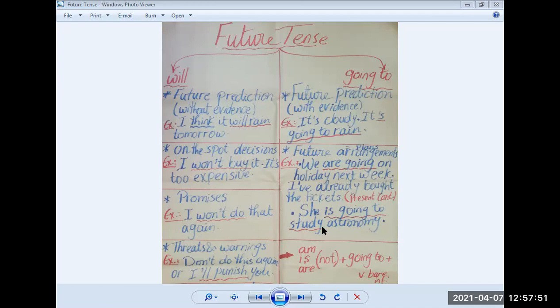So now we're done with going to. Let's continue dealing with will. Will is also used for promises. For example, I won't do that again. As if I want to say I promise I won't do that again. The future form here is won't do. Won't means will not.